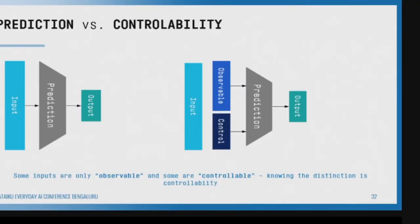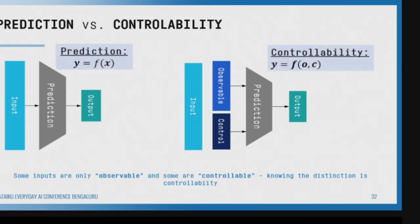When we see variables, it's not just about feature engineering — we need to think about what variables are controllable and what are not. Today we think: here is my input, predict output. But in the future, we need to think about how many variables are controllable and how many are just observable. This is the foundation of the next three layers we'll talk about. In math: prediction is y = f(x), but now x is broken into o (observable) and c (controllable).